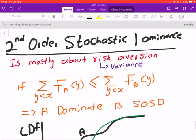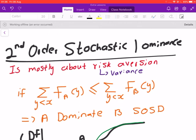For second-order stochastic dominance, in our course we are actually mostly going to look at investors who are risk averse.